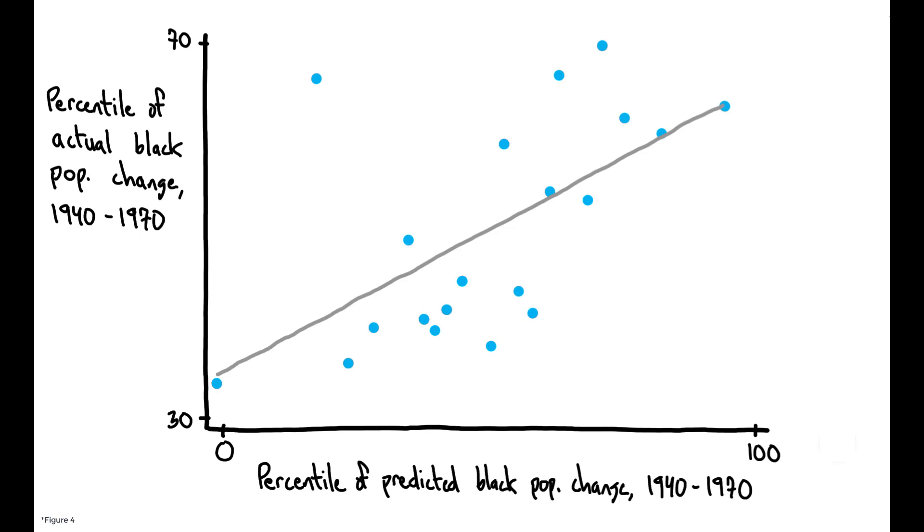This figure shows that this measure of predicted in-migration is strongly correlated with actual migration observed over the 1940 to 1970 period, while, by construction, being arguably independent of any unique features of the destination areas themselves.